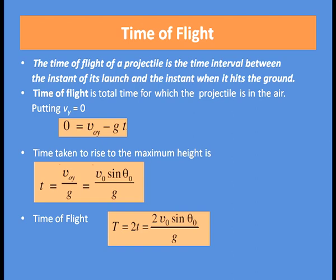Here we have used V = u + at, with a = minus g, V = 0, and u = Voy. So the time taken to rise to the maximum height is t = Voy / g = V0 sin θ₀ / g.